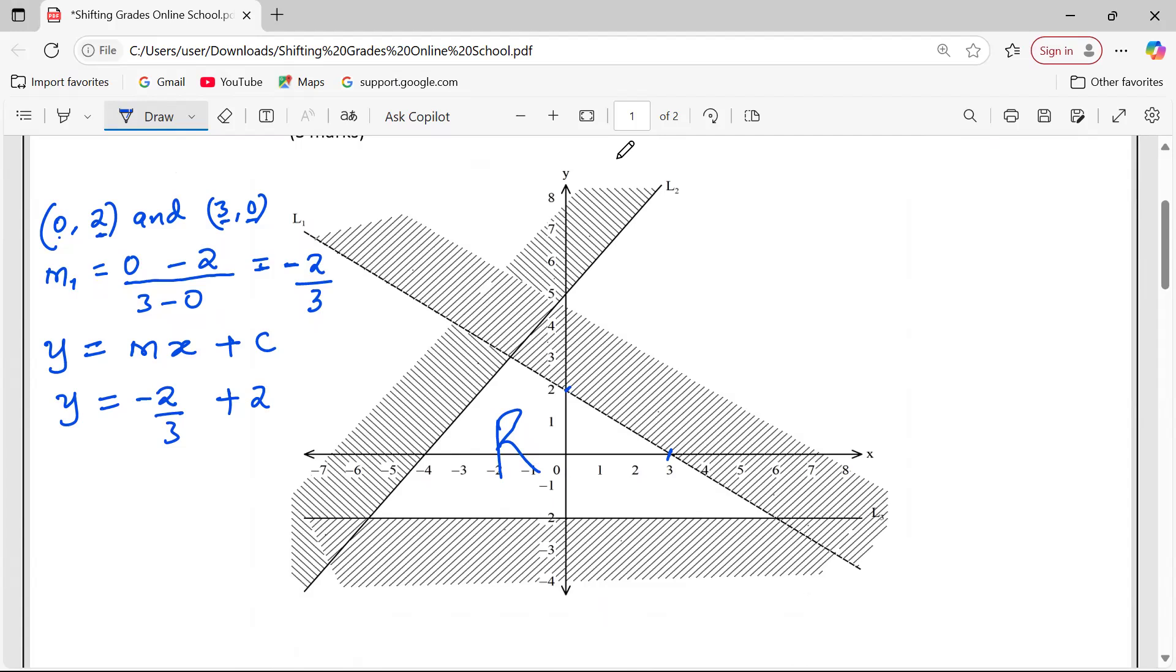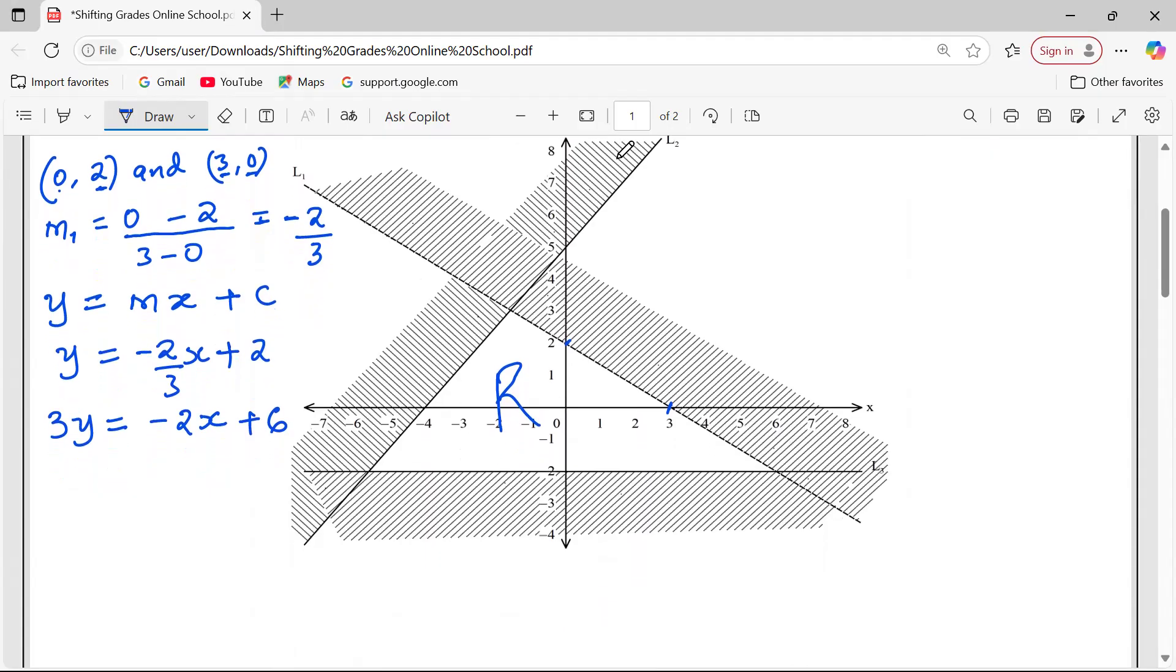We are done with the equation: negative 2 over 3X. We are now having the equation negative 2 over 3X plus constant C, which is the Y-intercept, and it's 2 for our case. So at this point, we can even use integers by ensuring that we don't have a fraction. So if we multiply through by 3, we shall do away with fractions, and we shall be having 3Y equals negative 2X plus 6, because I've multiplied everything by 3. So this is the first equation.